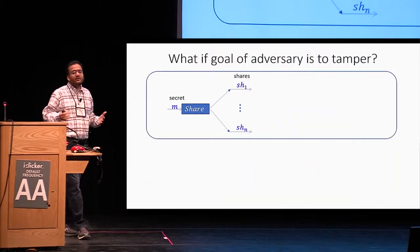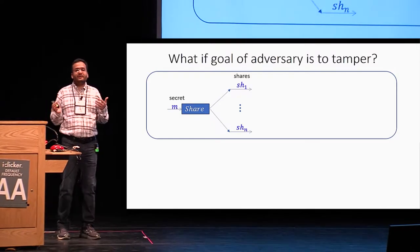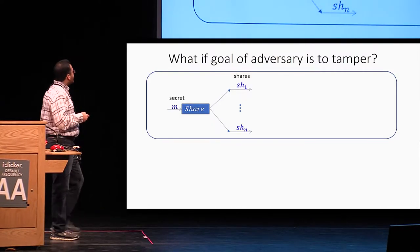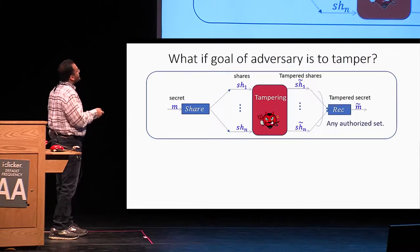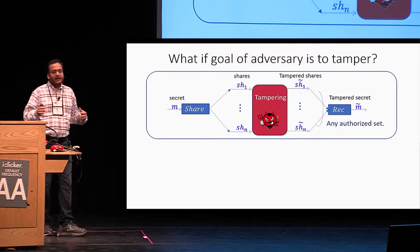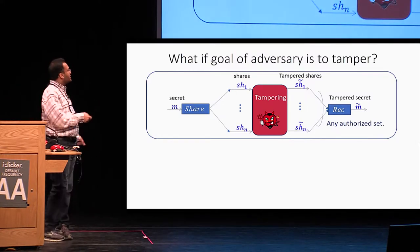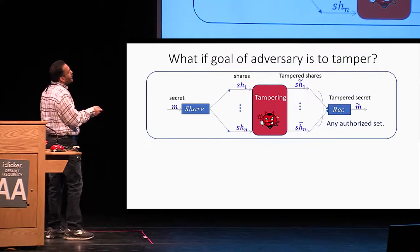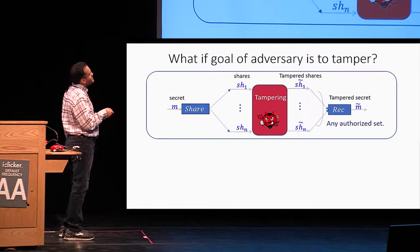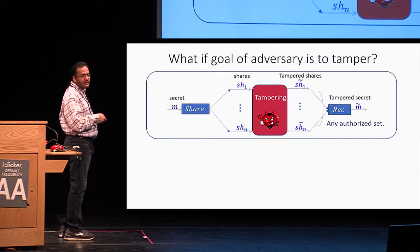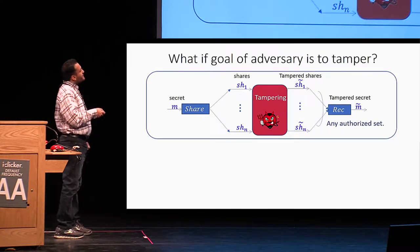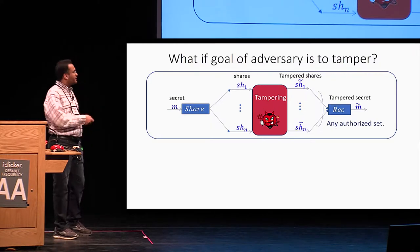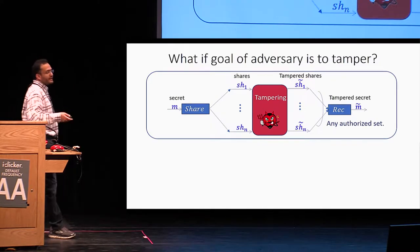But what if the goal of the adversary is to tamper with this message instead? We can consider the following kind of experiment where the adversary takes all these shares, applies some kind of tampering function, and outputs tampered shares sh1-tilde up to shn-tilde. Tilde denotes the tampered version of the variable. Then the reconstruction algorithm takes some subset and outputs a tampered secret m-tilde.